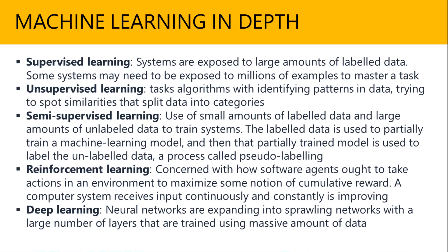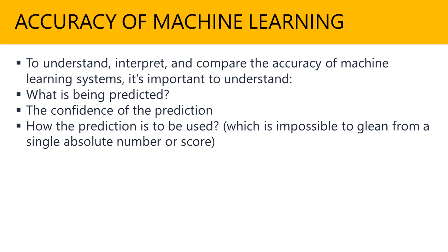You need to understand these types in depth. When we talk about labeled data, you should know what supervised learning is, what unsupervised learning is, and so forth. Next is the accuracy of machine learning — how to understand, interpret, and compare the accuracy of a machine learning system. There are about three things to focus on. First, very importantly: what is being predicted? What is the final outcome that you're looking for?